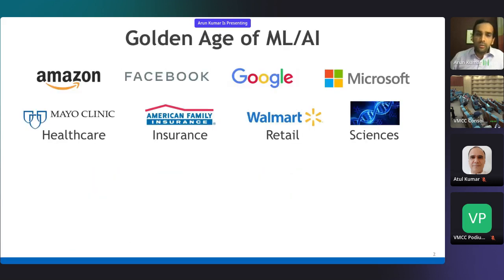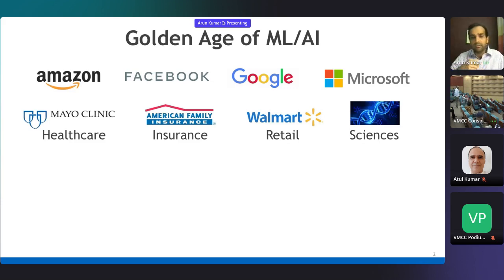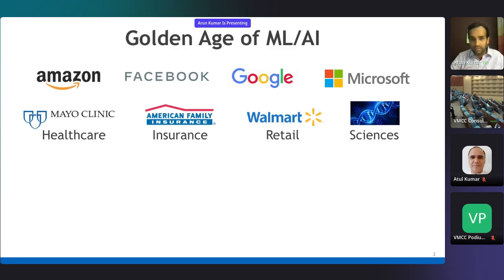It's no secret that we are now in the golden age of machine learning and AI. All the major web companies are using this extensively for all sorts of applications. And this has created enormous excitement in various enterprise sectors like healthcare, insurance, retail, telecom, finance, and even in academic domains like the domain sciences and digital humanities.